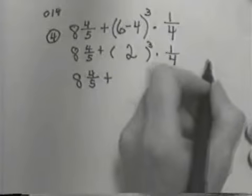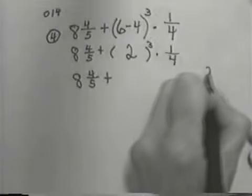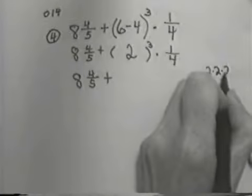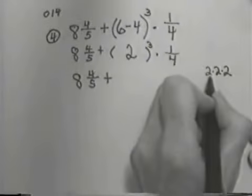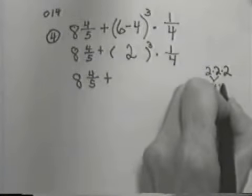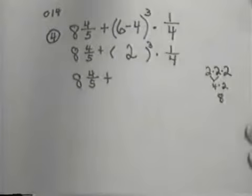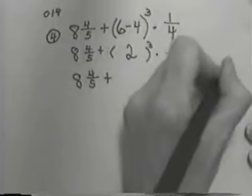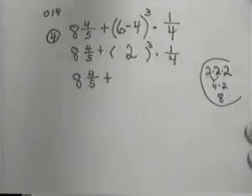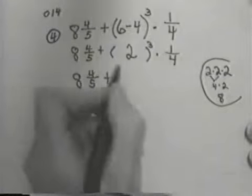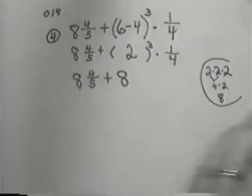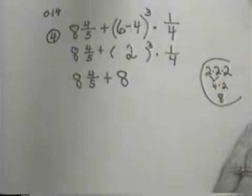And now we've got to raise 2 to the third power. Well, 2 to the third power means we're going to take 3 2's and multiply them together. When we do that, we get 4 times 2, which is 8. So that answer will be 8. Let's just do this to keep it separate from our problem. So we're going to fill in an 8 here. That was our 2 cubed.